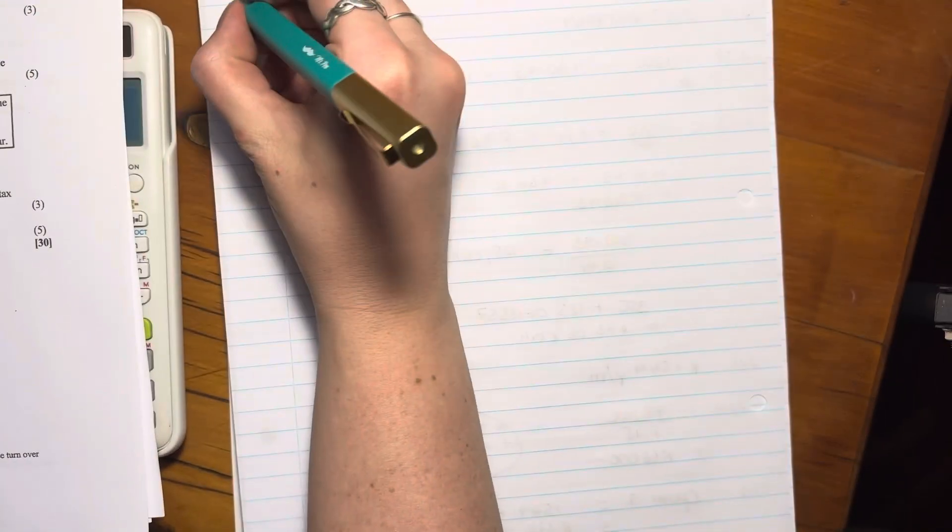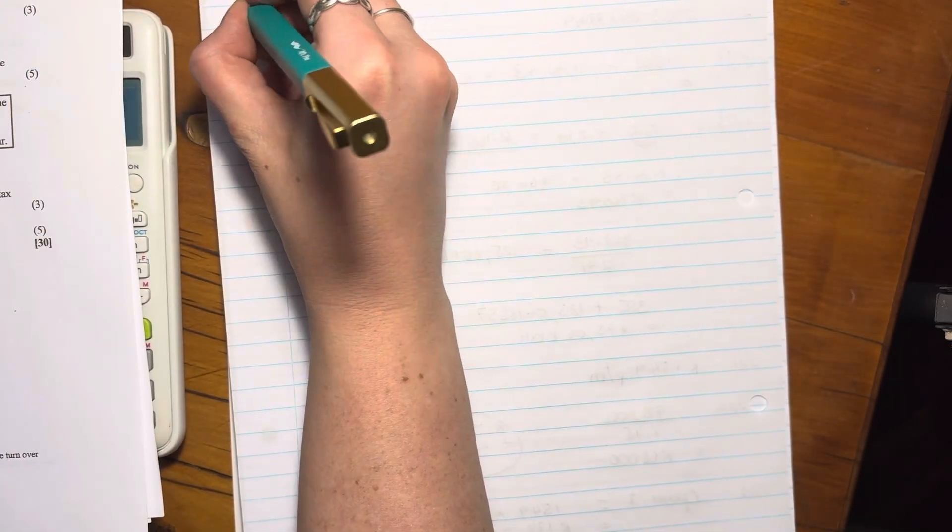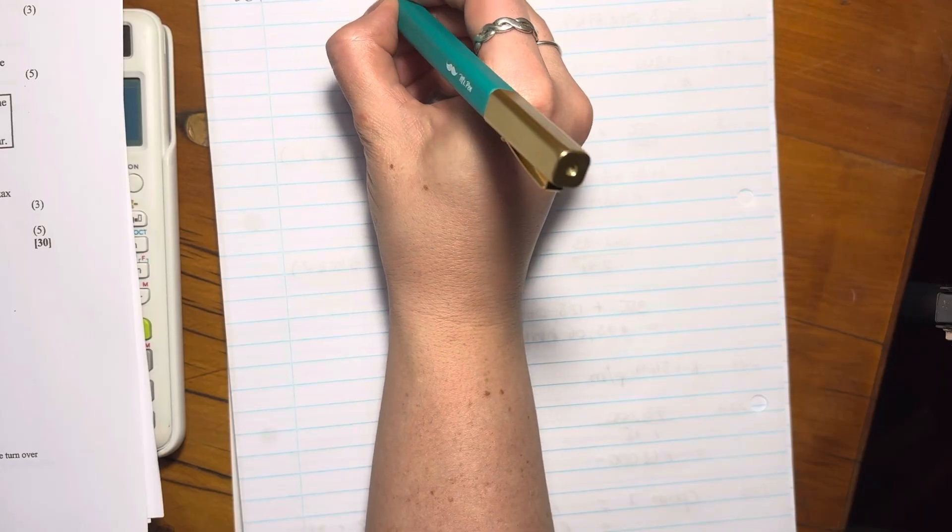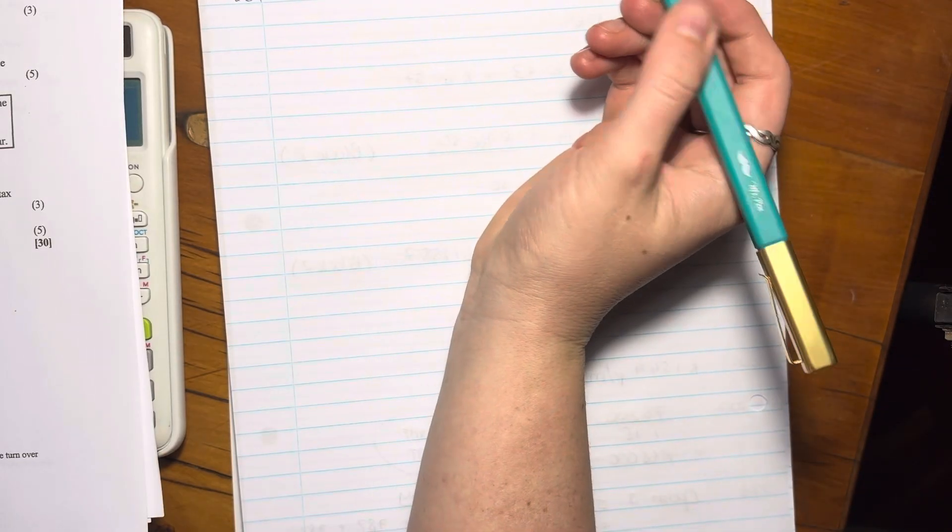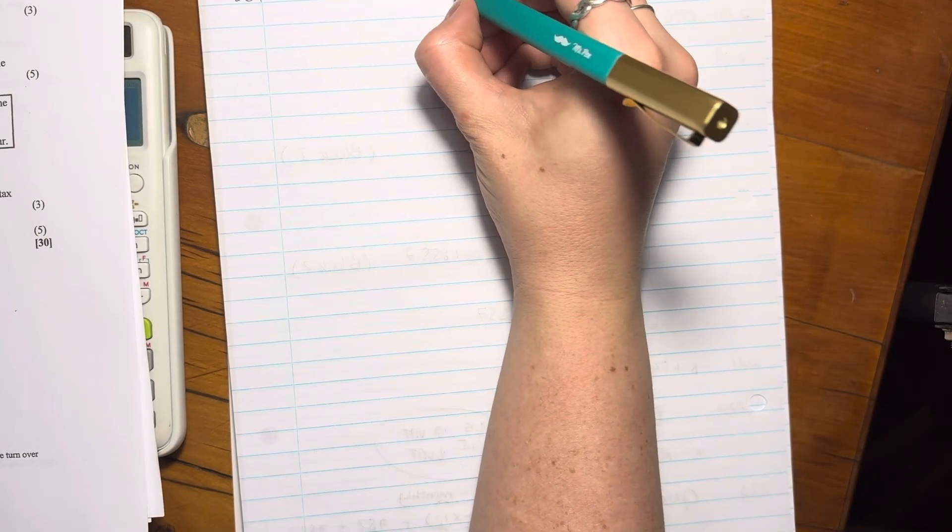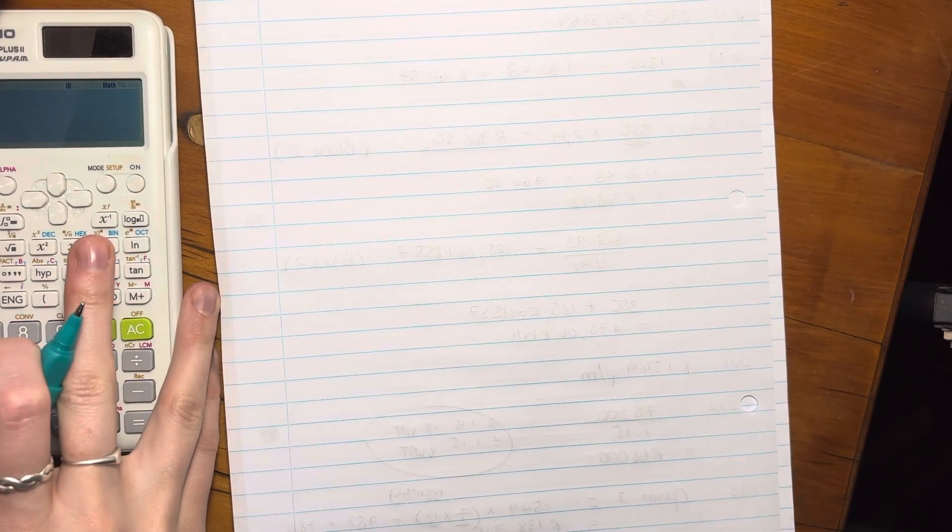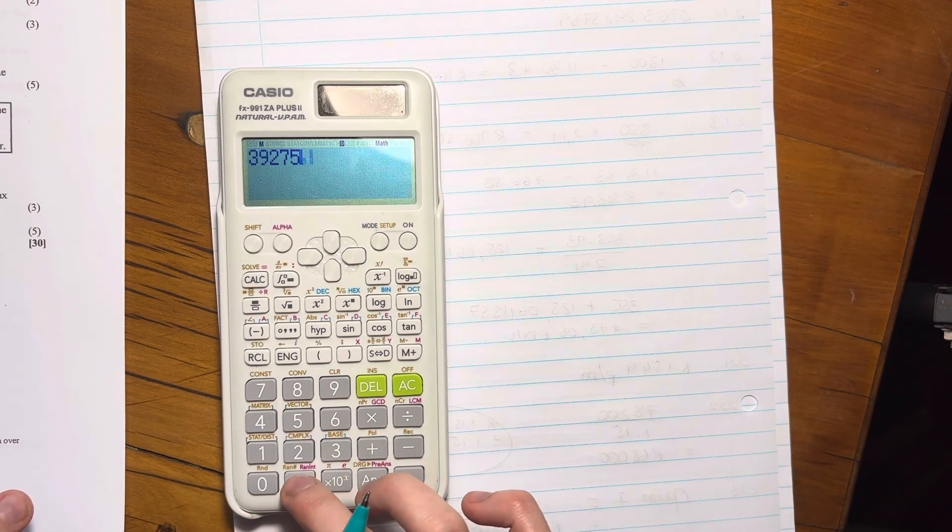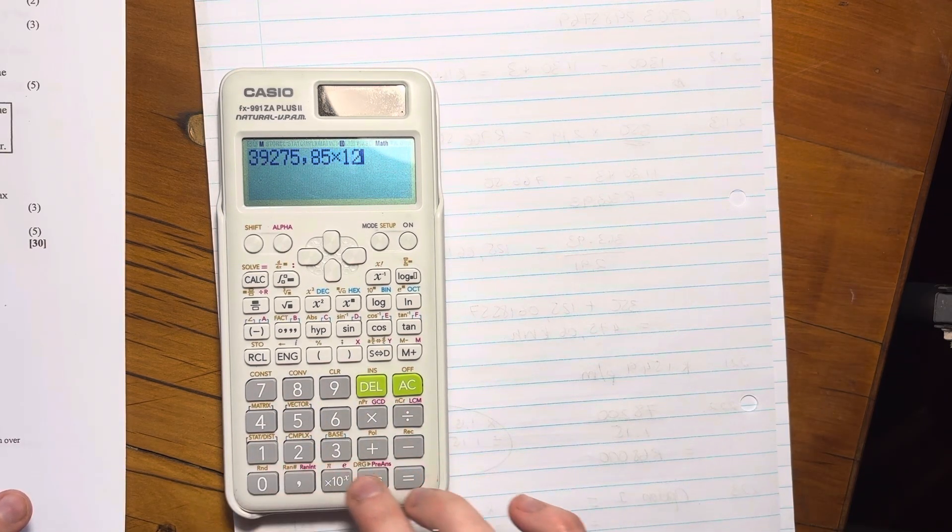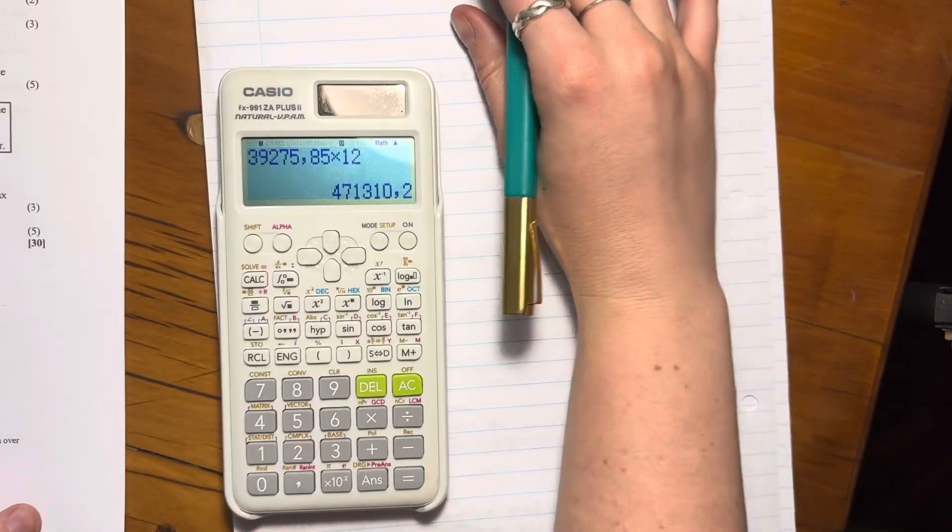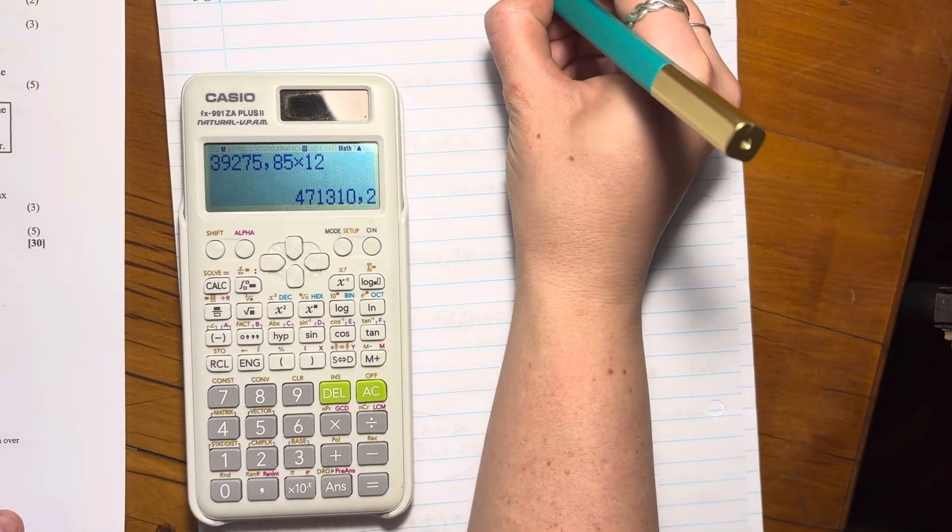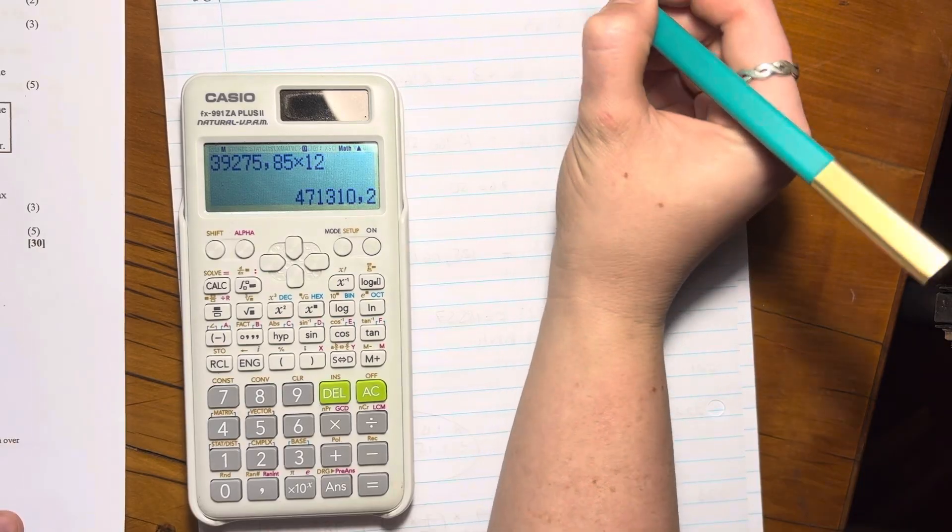So we're going to start by working out what is her annual salary. So there's that, that's her monthly, there's 12 months in a year. So pop that into your calculator there, 39,275.85 times it by 12 and that is then her annual salary. So write that out nicely. That's her annual salary.